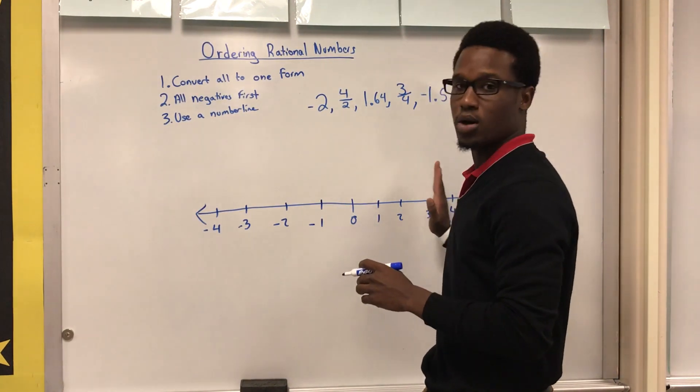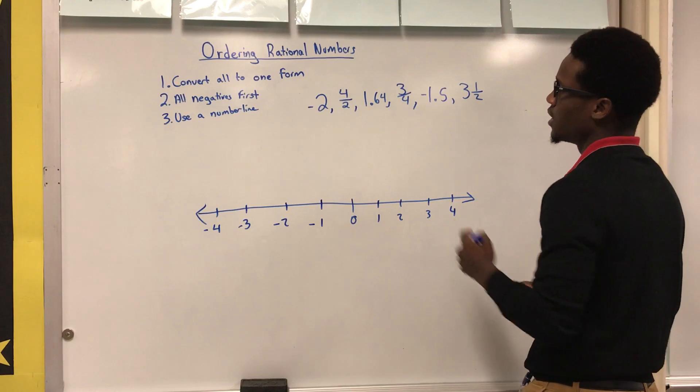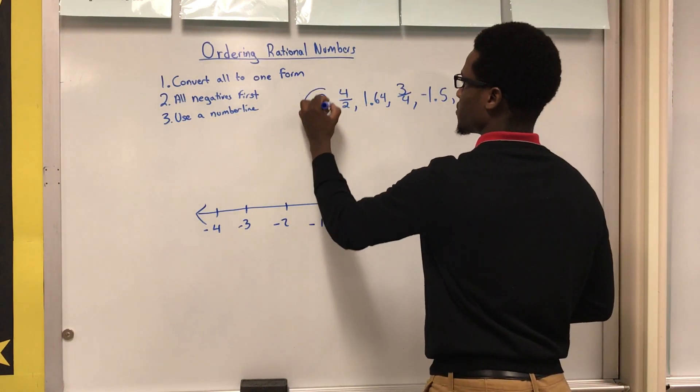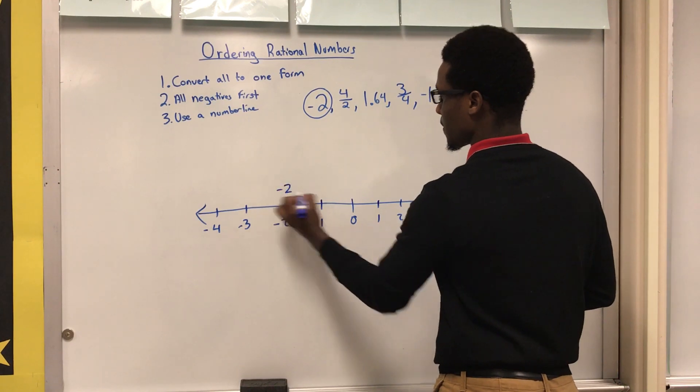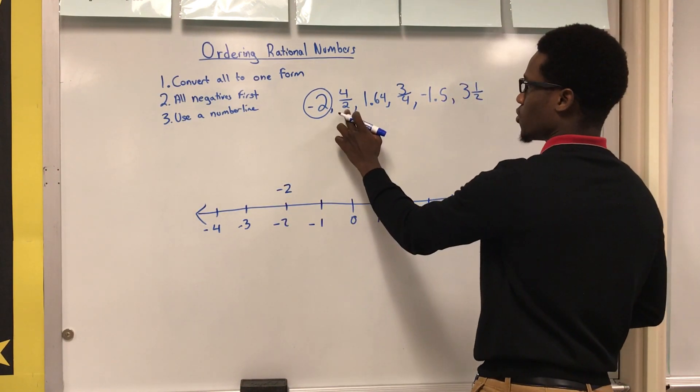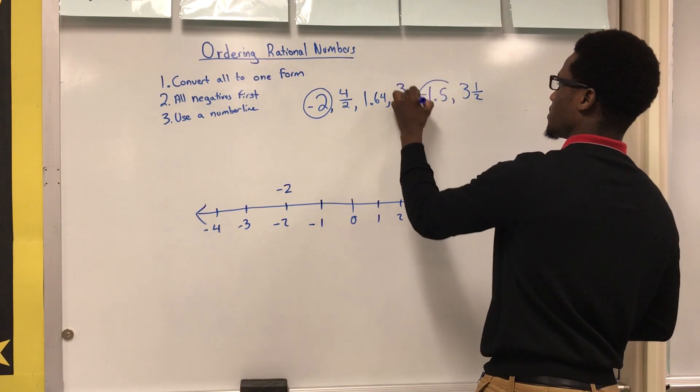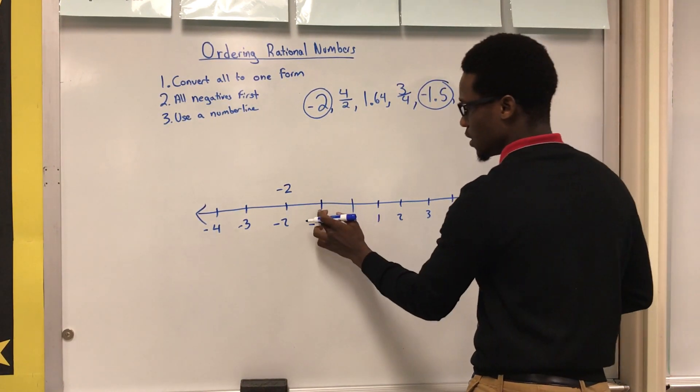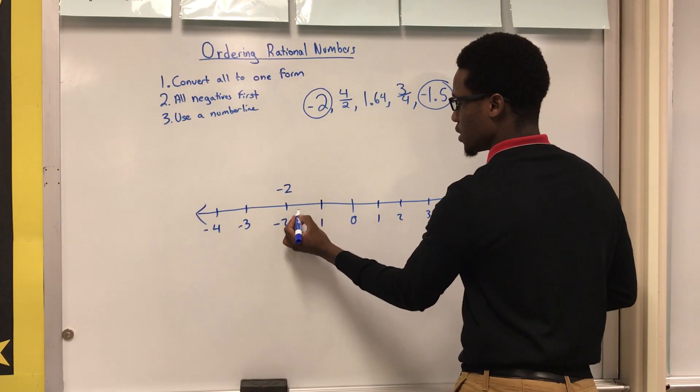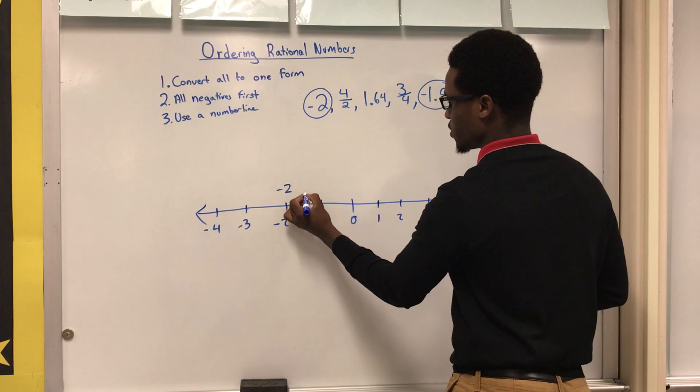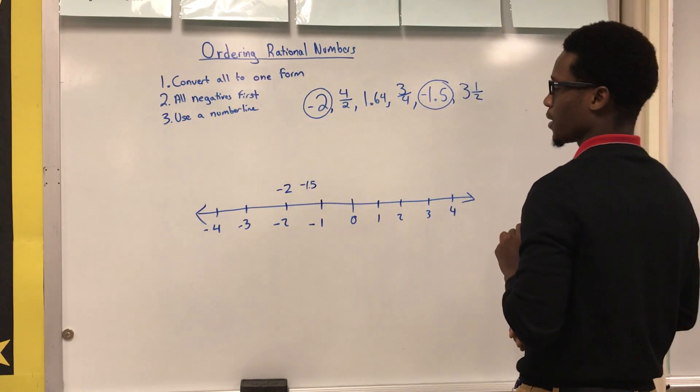Okay, so let's go ahead and get started. Our first number is going to be negative two, so negative two goes right here. Next we have four over two. Let's actually stick to the negatives first, so this is going to be negative 1.5. So 1.5 is going to be in between negative one and negative two, so it'll be about right here, negative 1.5.